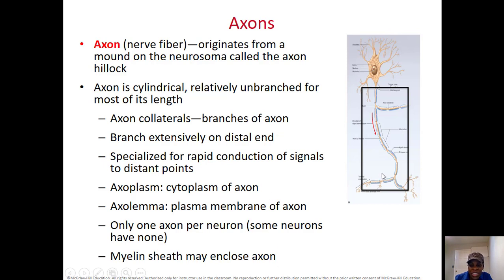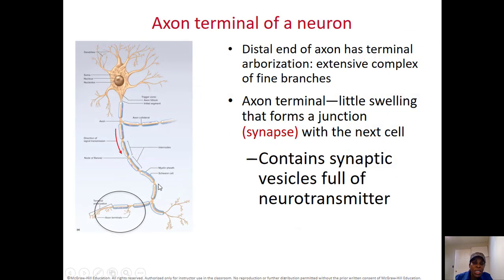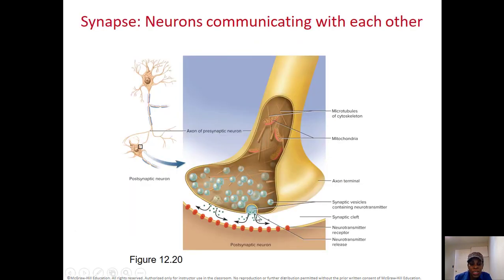Neurons have branches because they have to communicate with thousands of other neurons. At the very end is the axon terminal, where you have synapses. Those synapses contain synaptic vesicles — little bags that contain neurotransmitters that need to be secreted. You can see the big picture of the synapse with vesicles being secreted onto the next neuron. This is how one neuron transmits information to the next.